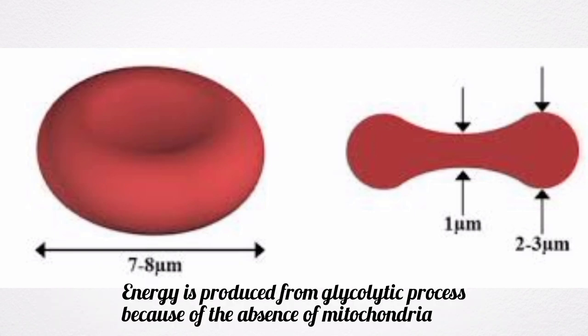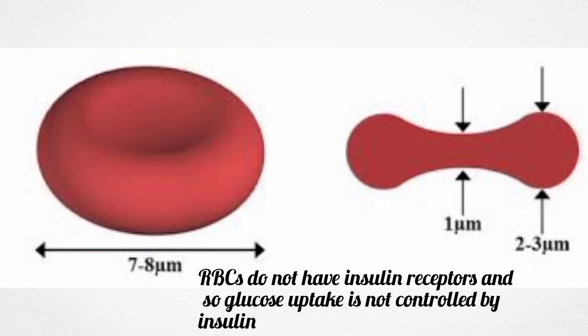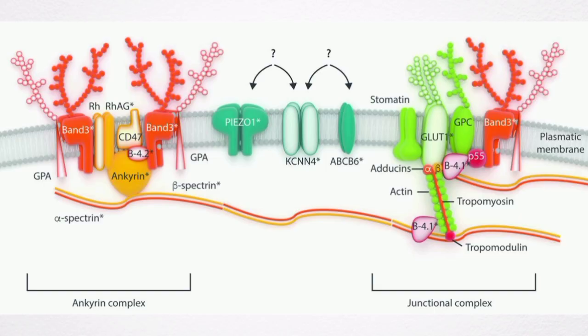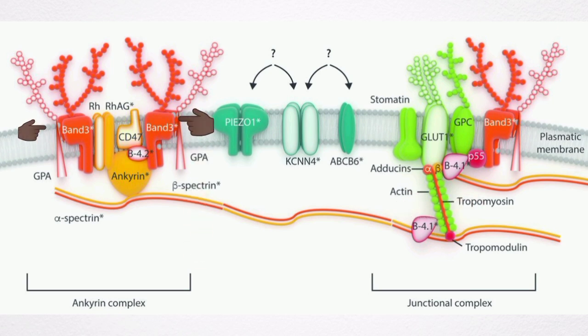Because of the absence of mitochondria, energy is produced from the glycolytic process. The red blood cell does not have an insulin receptor, so the glucose uptake by this cell is not controlled by insulin. The red blood cell has a special type of cytoskeleton which is made up of actin and spectrin. Both proteins are anchored to transmembrane proteins by means of another protein called the anchoring protein.